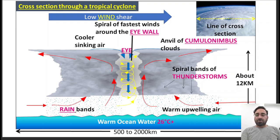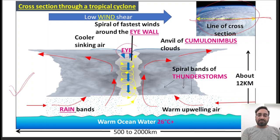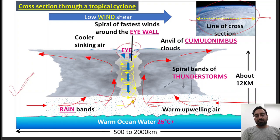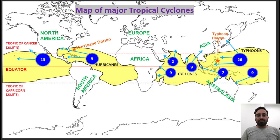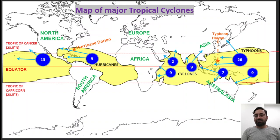This is basically a top view of a cyclone — it looks like this. And this is the cross-section of a tropical cyclone. There is a central part, what we call the eye of the cyclone, where there is low pressure in the center, and winds come towards this low pressure area and then start rising. Now if we see the distribution of tropical cyclones, they basically occur between the Tropic of Cancer at 23.5° North and the Tropic of Capricorn at 23.5° South.